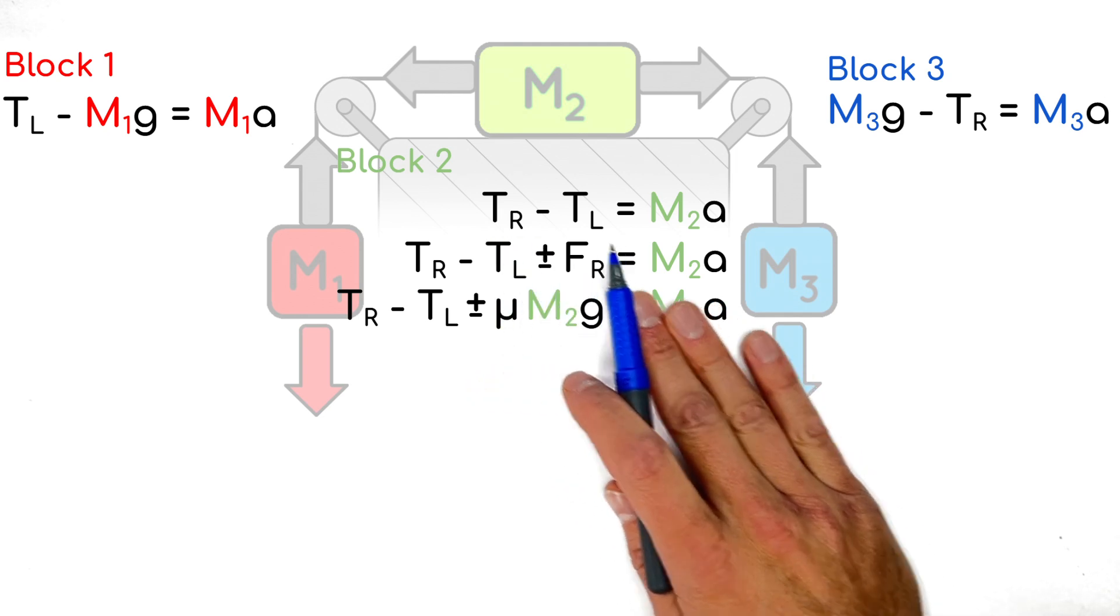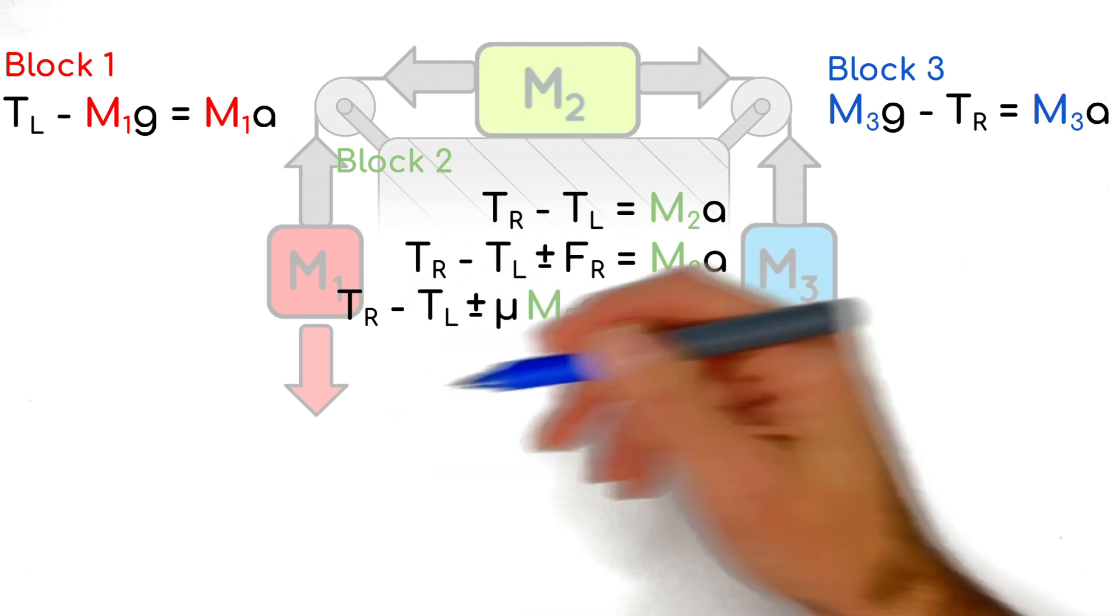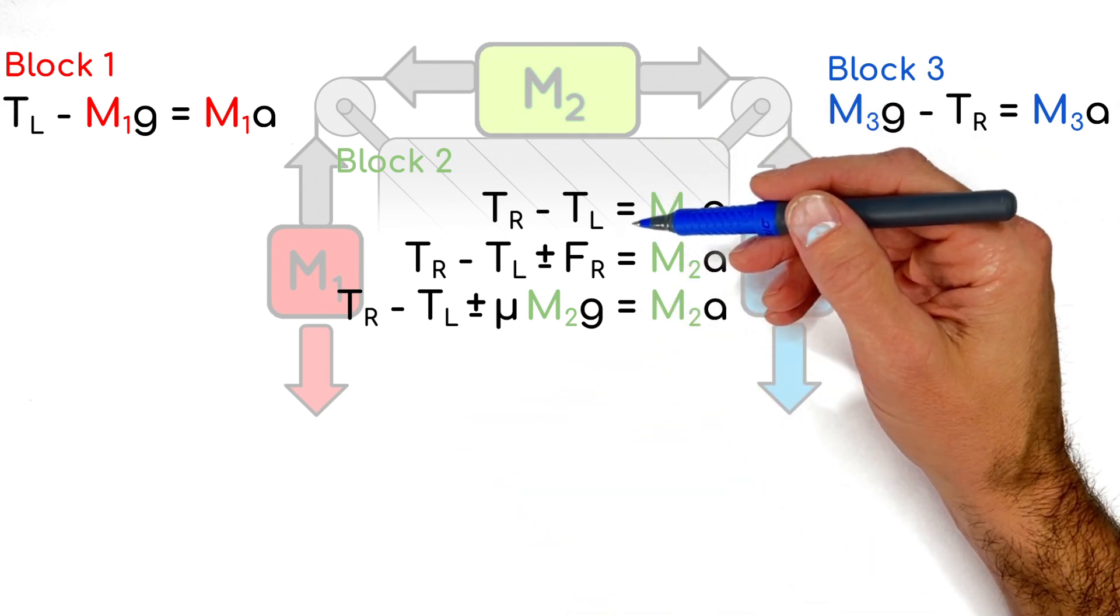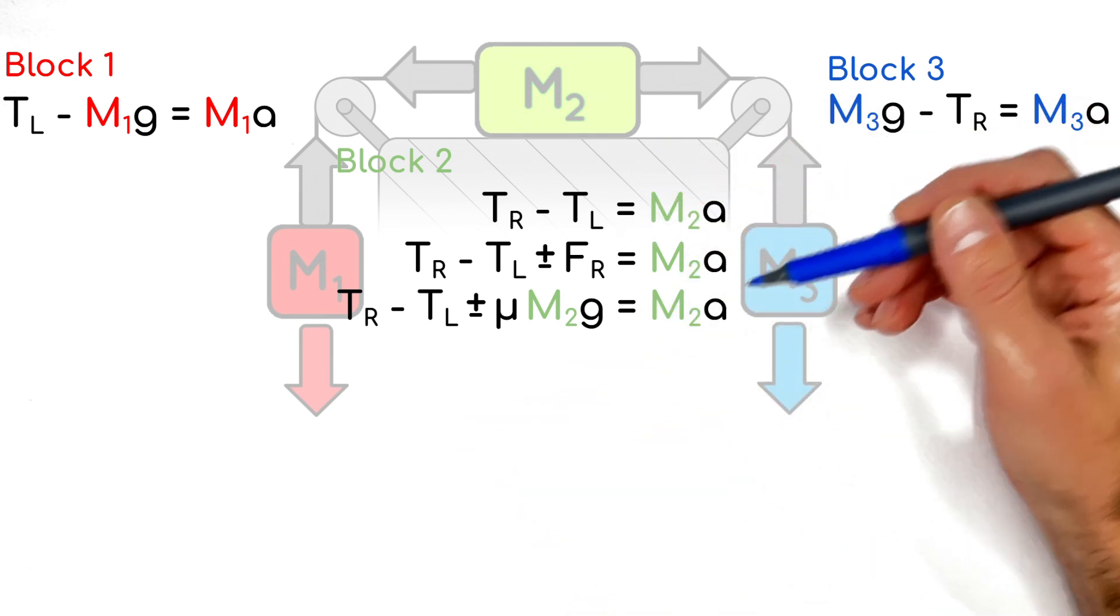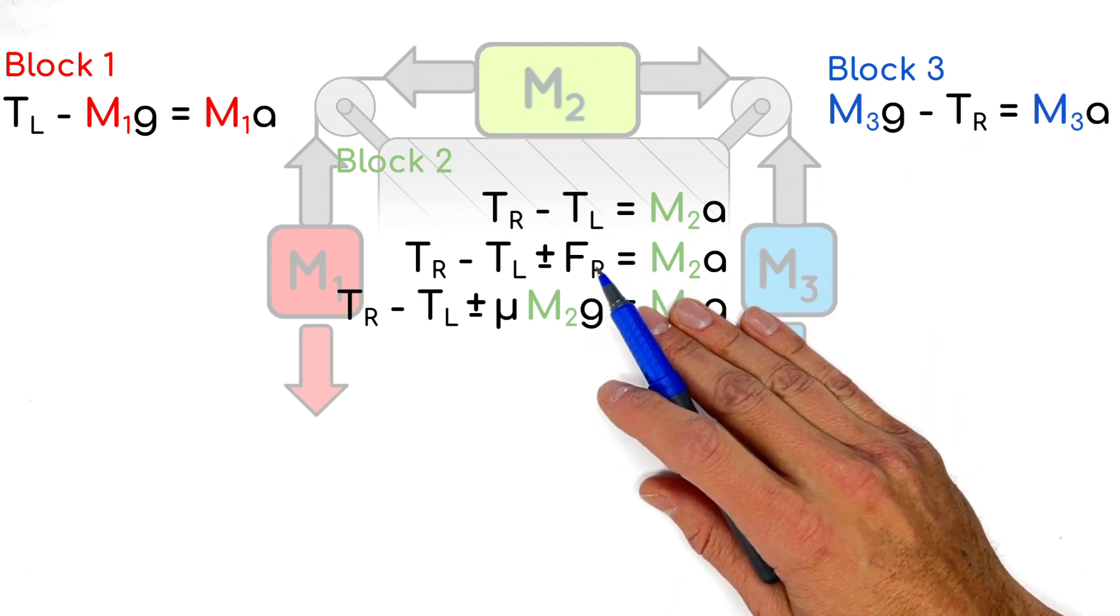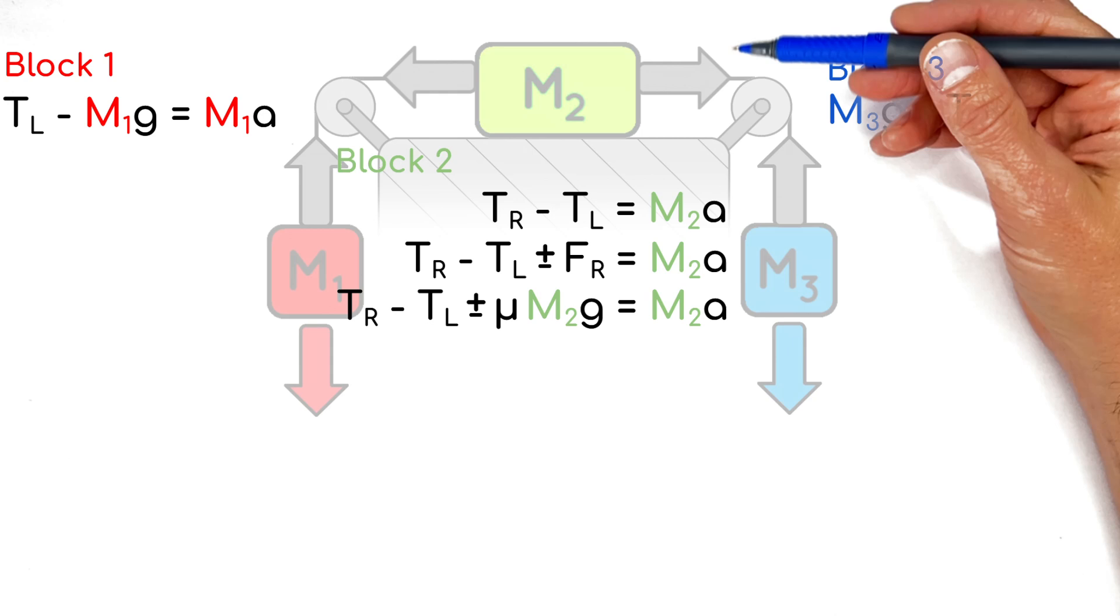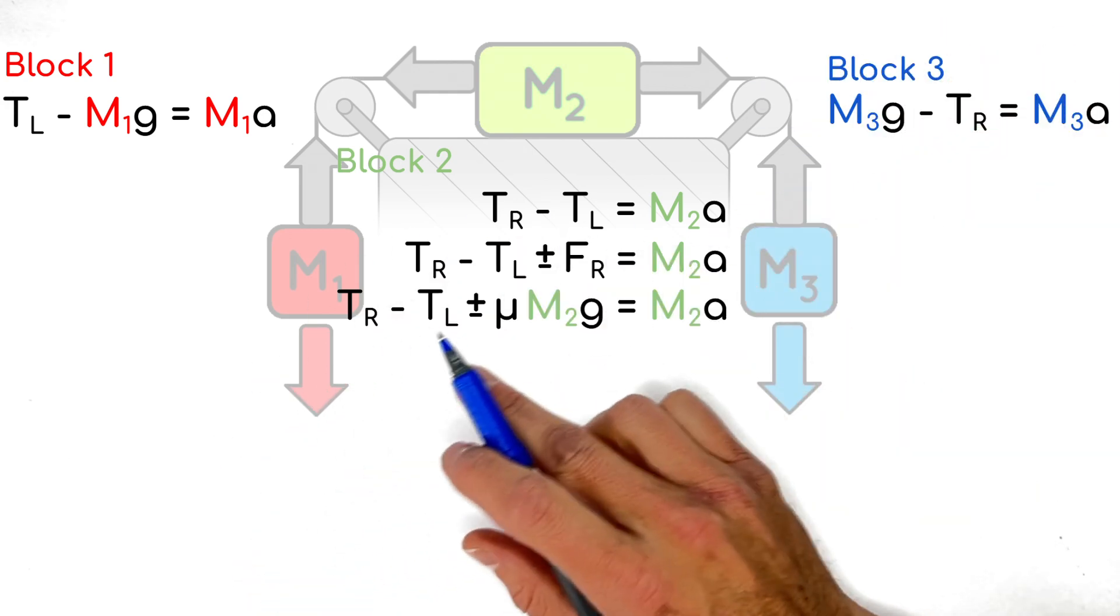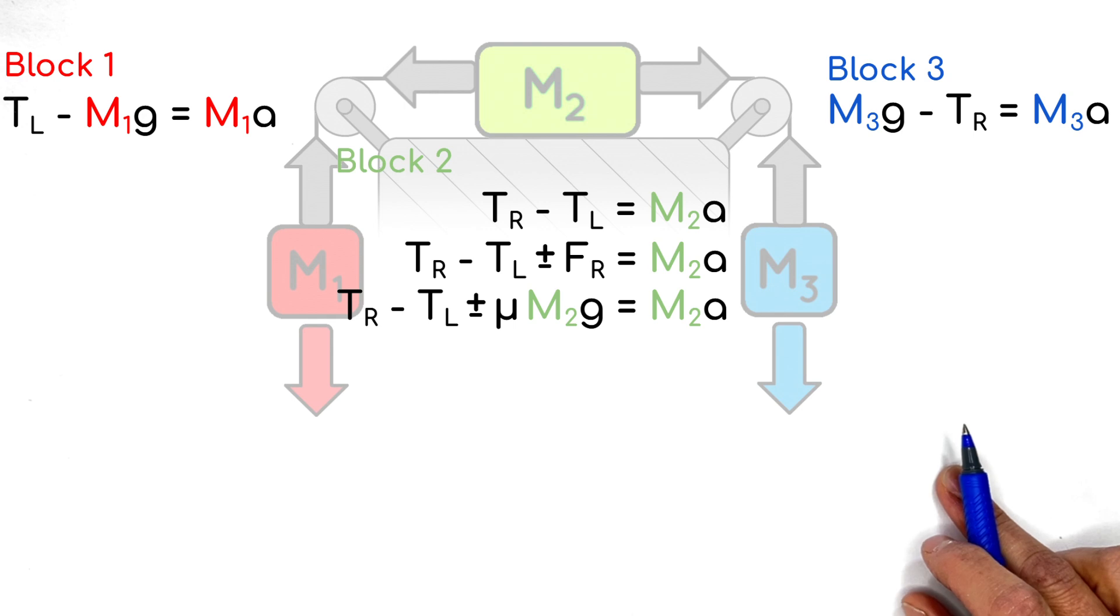Now, friction we can expand to say mu Fn, which in this case we know is mu times M2g. And what this leaves us with across the whole page here now are three equations with three unknowns. So what we're going to do is rearrange this equation on the left for T, this equation on the right for T, and then sub them in here.